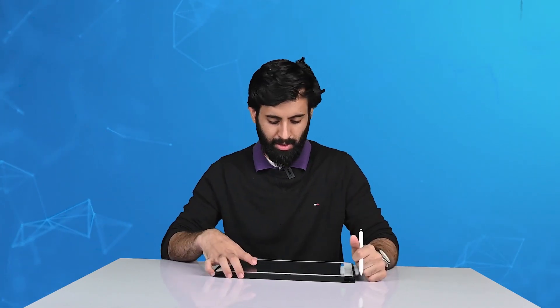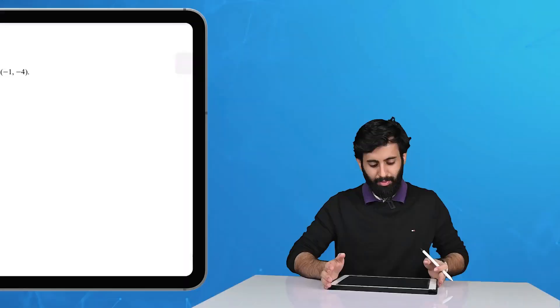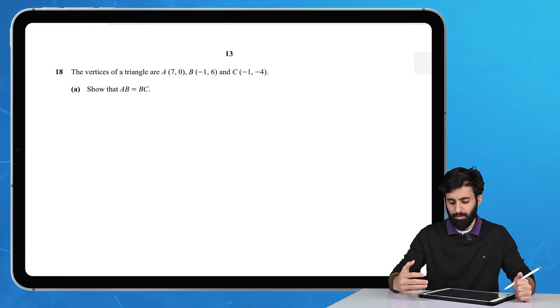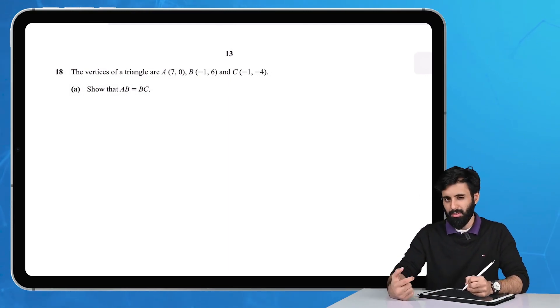In this video we're going to solve another past paper question from October/November 2019 Paper 1 Variant 2. Question number 18 says: The vertices of a triangle are A(7,0), B(-1,6), and C(-1,-4). It says show that AB equals BC, so it's talking about the length.